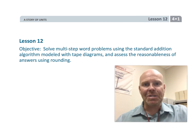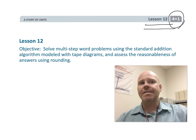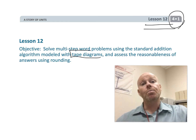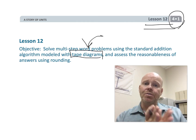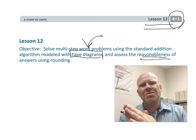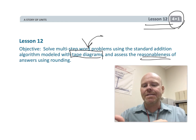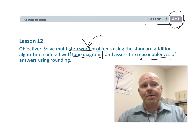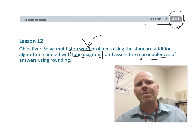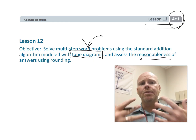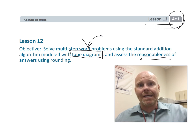This is fourth grade module one lesson 12. In this lesson we're going to be drawing lots of tape diagrams for some word problems, and then we're going to be using estimation to look back on our answer to decide if it makes sense. The thing I like about this lesson is it takes that rounding that we've been doing and gives it a reason — why have we been learning to round? Well, it's so that we can estimate and look back on our work to see if the answer is at least a reasonable answer.